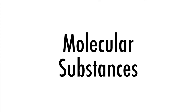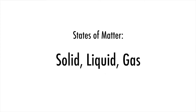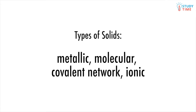You probably know about the three common states of matter: solid, liquid, and gas. But did you know that you can get different types of solid with different properties? The four types of solid you'll be asked about in this exam will be metallic, molecular, covalent network, and ionic.